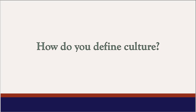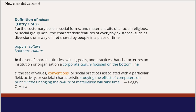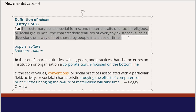Alright, did you define it? Perfect. Let's go to the dictionary definition of culture — how close did you come? It says the definition of culture is the customary beliefs, social forms, and material traits of a racial, religious, or social group. Also, the characteristic features of everyday existence, such as diversions or a way of life shared by a people in a place or time.